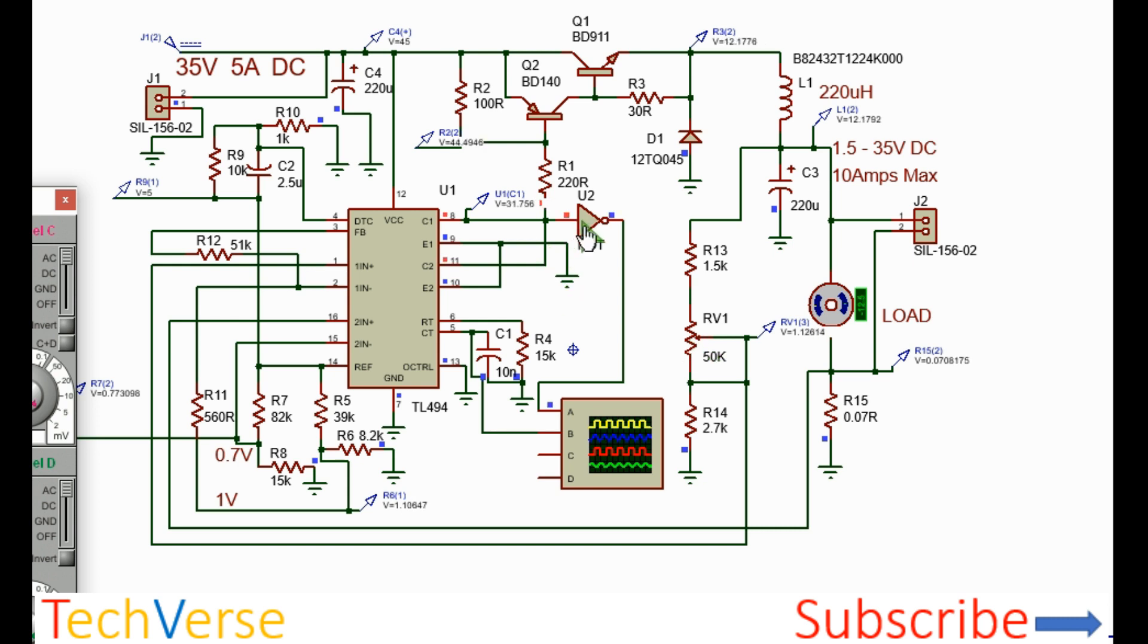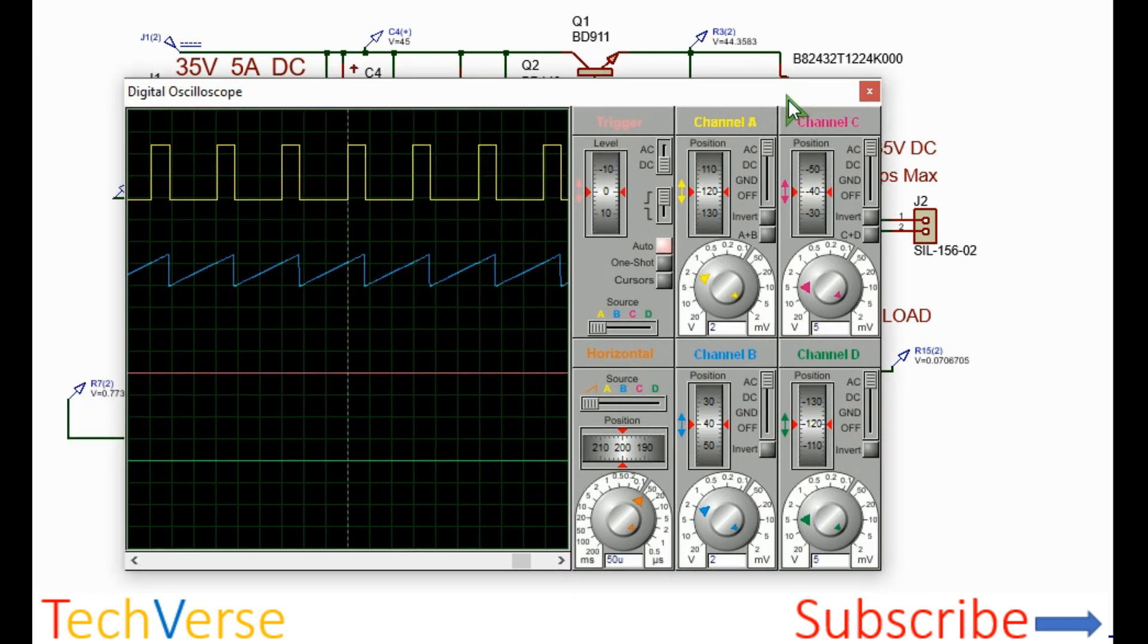I have included this NOT gate to ensure that the waveform on the oscilloscope follows the base drive of the internal BJTs. That's all about this simple DIY bench power supply which is really reliable.